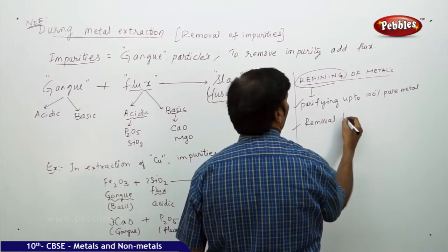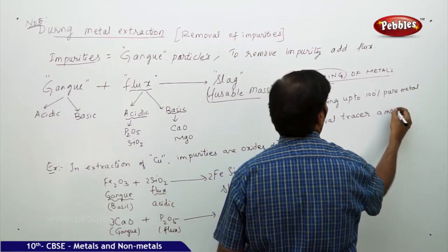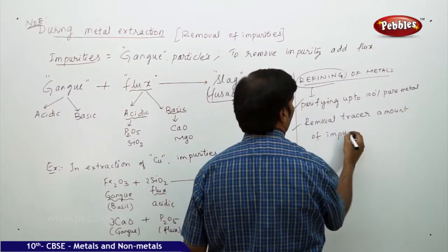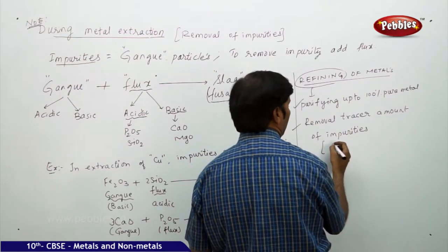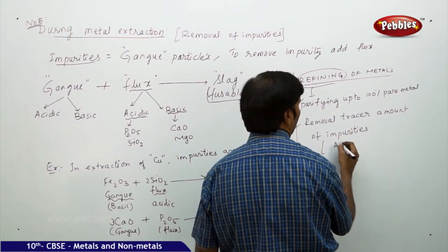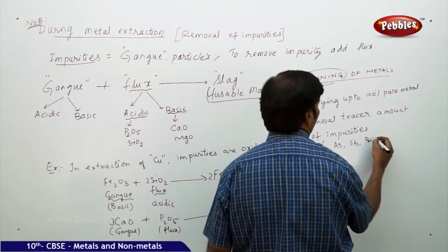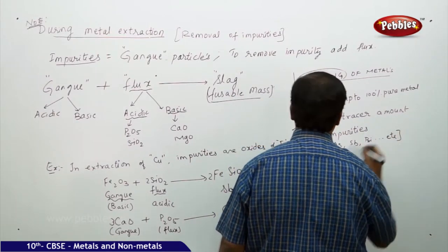Second is, removal of tracer amount of tracer, amount of impurities, like that is, arsenic, arsenic, antimony, then bismuth, tracer amount of elements, etc., removal of this.